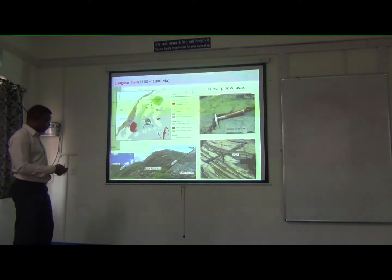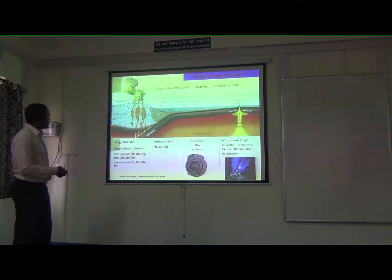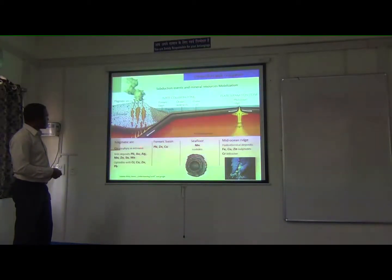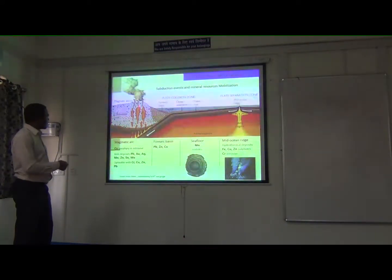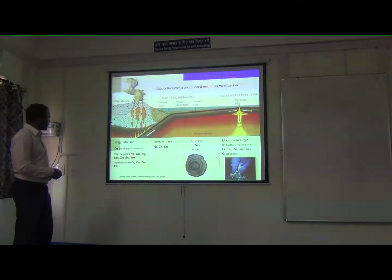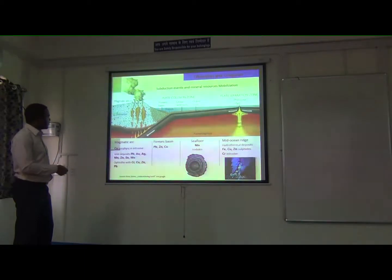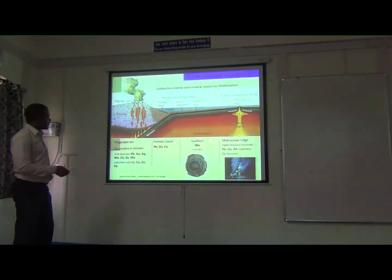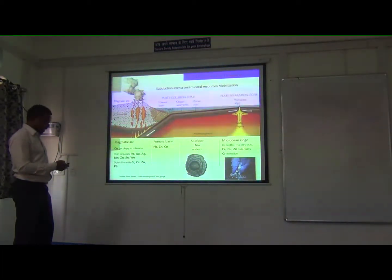The general mineralization: when we have the volcanic area, mostly we get base metals, and from the back-arc basin we are able to form lead, zinc, and copper, but also we have iron kind of metals from the area.